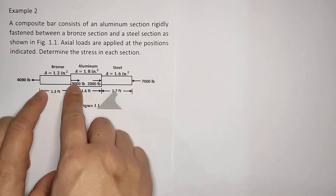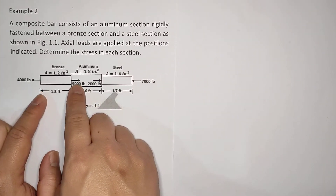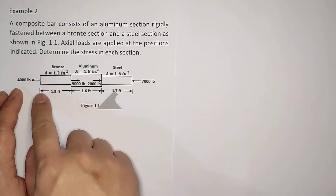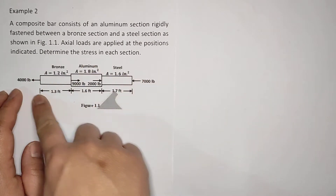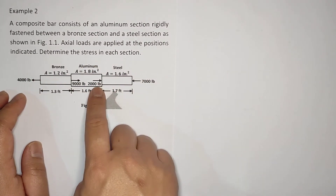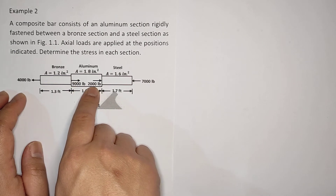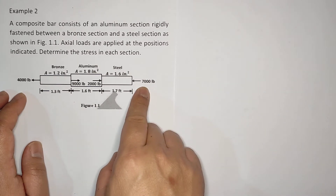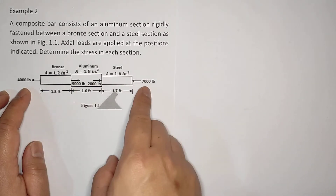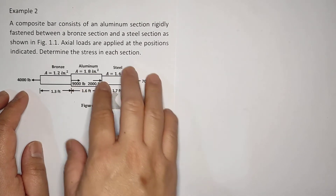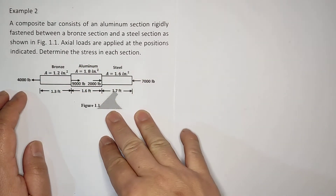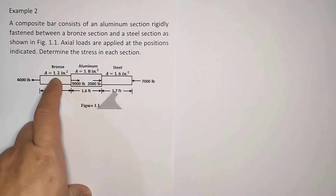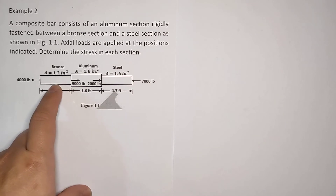Take note this is a composite bar with external loads: 4,000, 9,000, 2,000, and 7,000. If you do a summation of forces, taking note of the directions, you have 9,000 plus 2,000 equals 11,000 going to the right (positive), and 7,000 plus 4,000 going to the left, also 11,000. Meaning this whole system is in equilibrium.